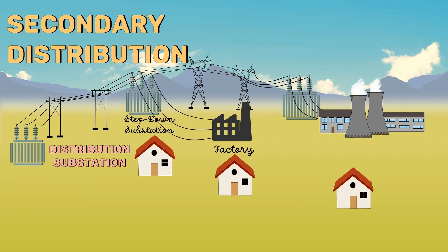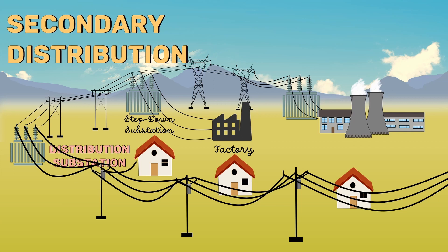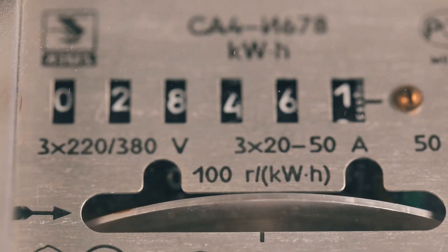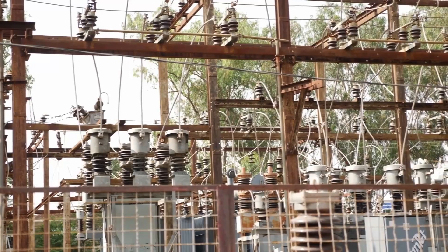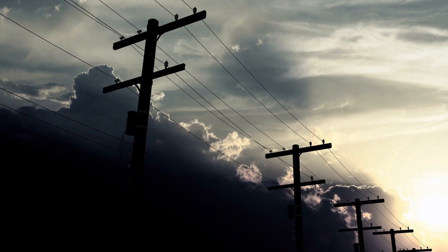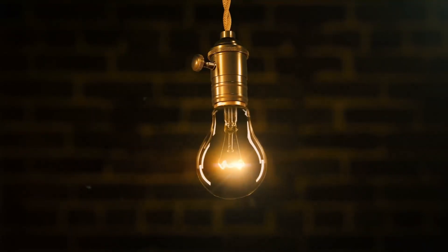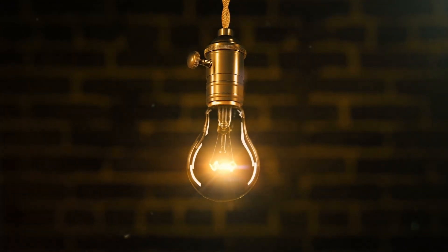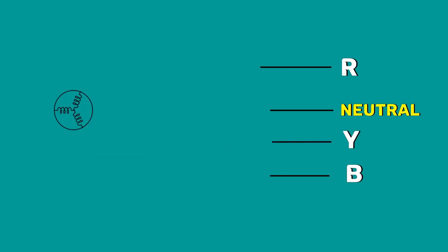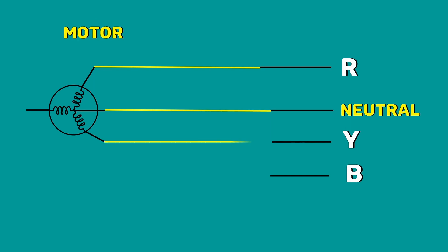The secondary distribution system is the part of the AC distribution system which includes the range of voltages a normal consumer uses. It is operated at very low voltage level, which is typically equal to the voltage of electric appliances. The distribution substations are located near consumers' localities. Here, the voltage is stepped down and is carried out by a three-phase, four-wire system. The single-phase domestic loads like lamps are connected between any one phase and the neutral, whereas three-phase motor loads are connected across three-phase lines directly.